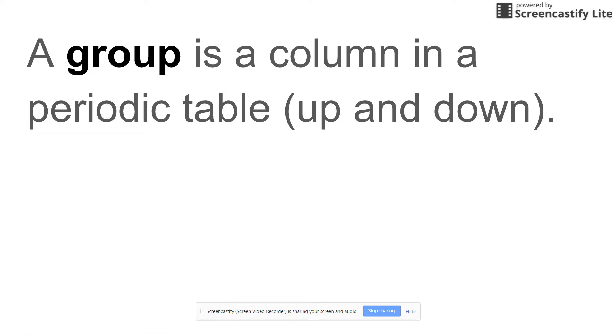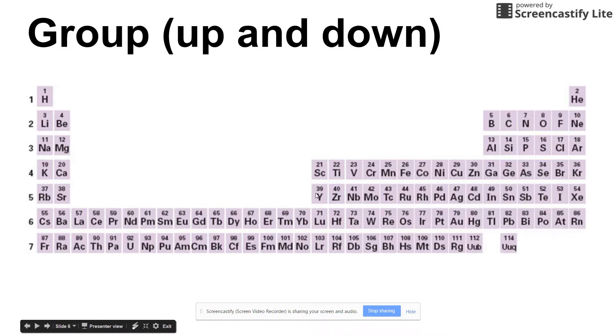The next terminology is group, and those are the columns in the periodic table, that's up and down. This one is expanded. Usually this section is cut out and put below, the one you'll be using. I'll show you one at the end that is similar to the one that you'll be using, but there are 18 groups in the periodic table. Here's group one, group two, group 18 are the noble gases, 17 is the halogens here.